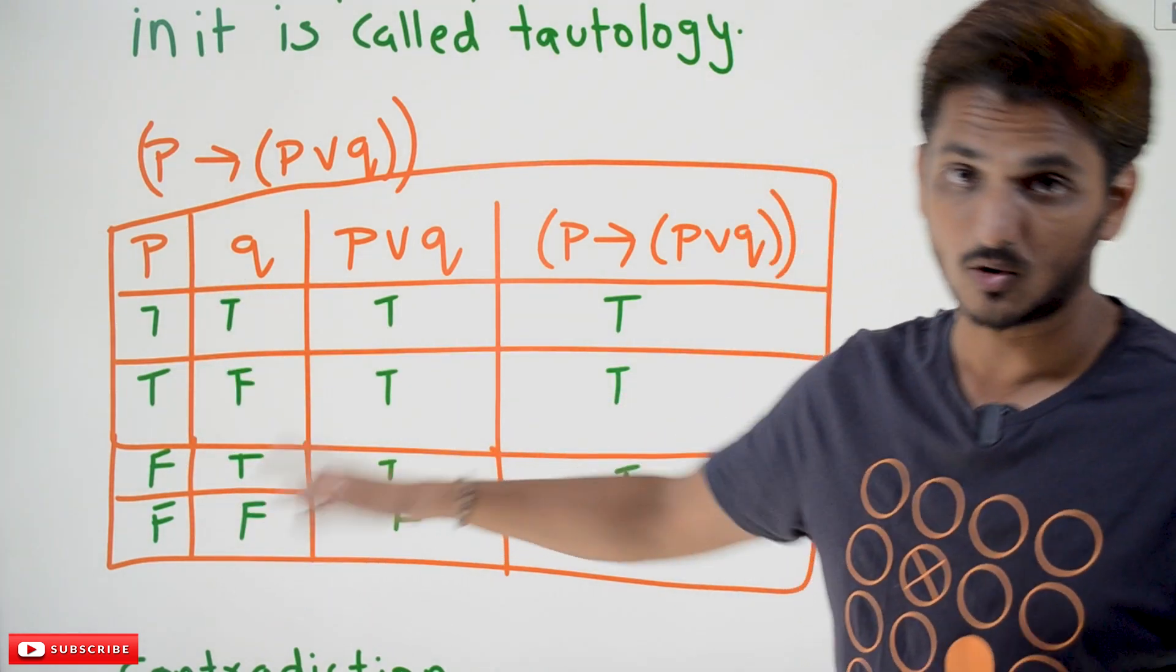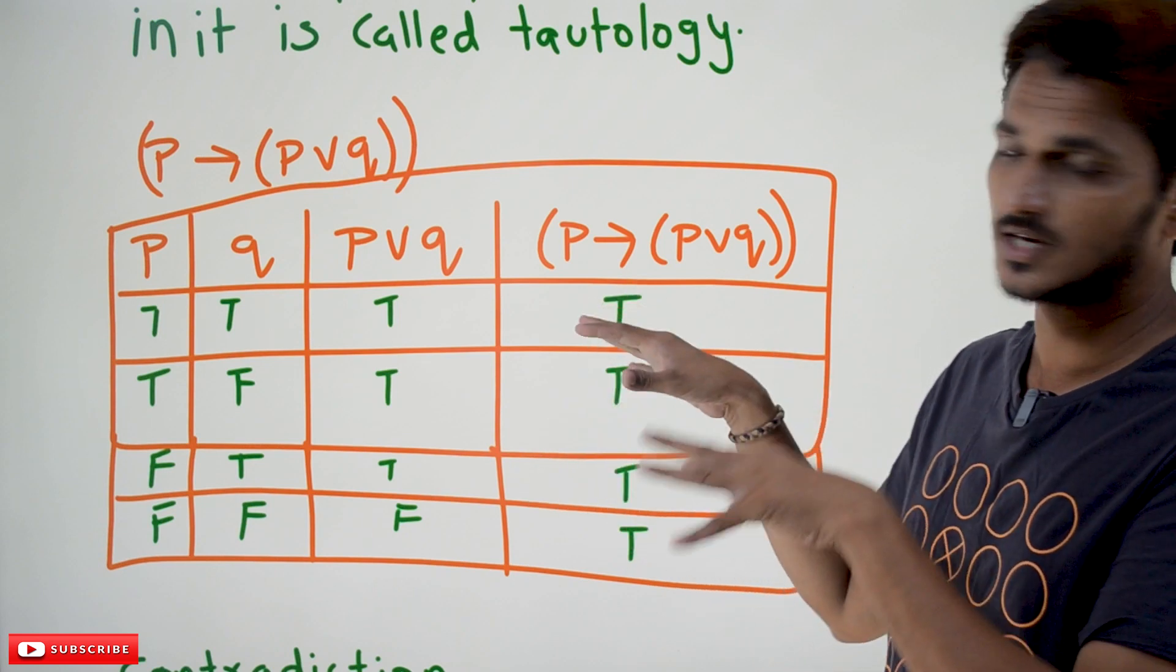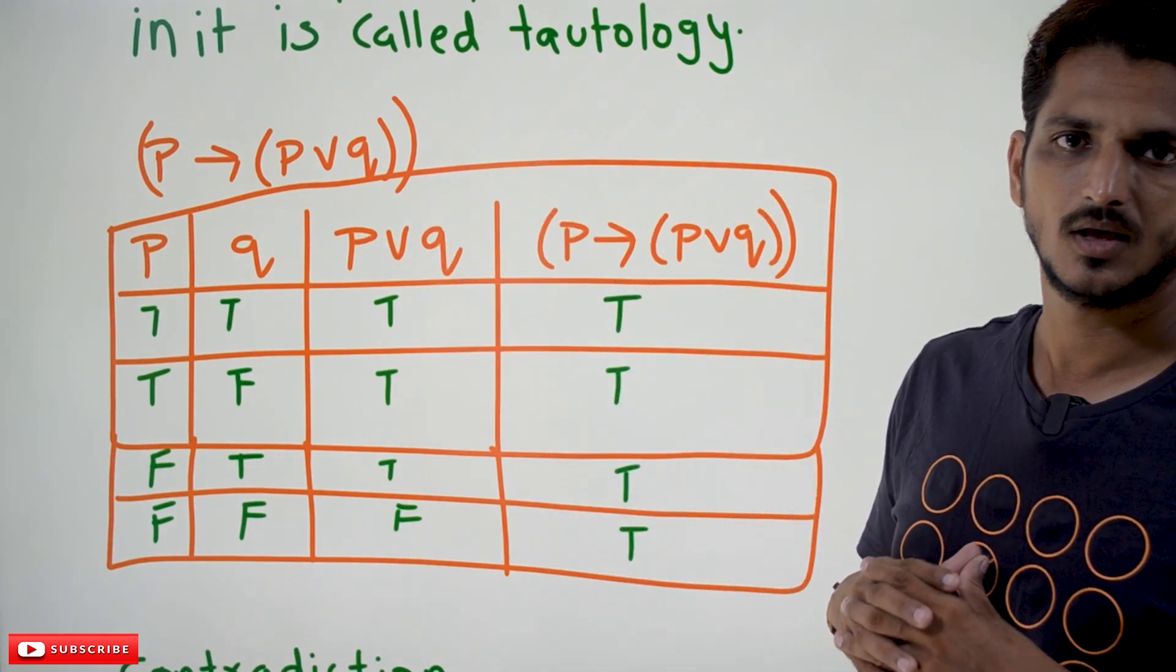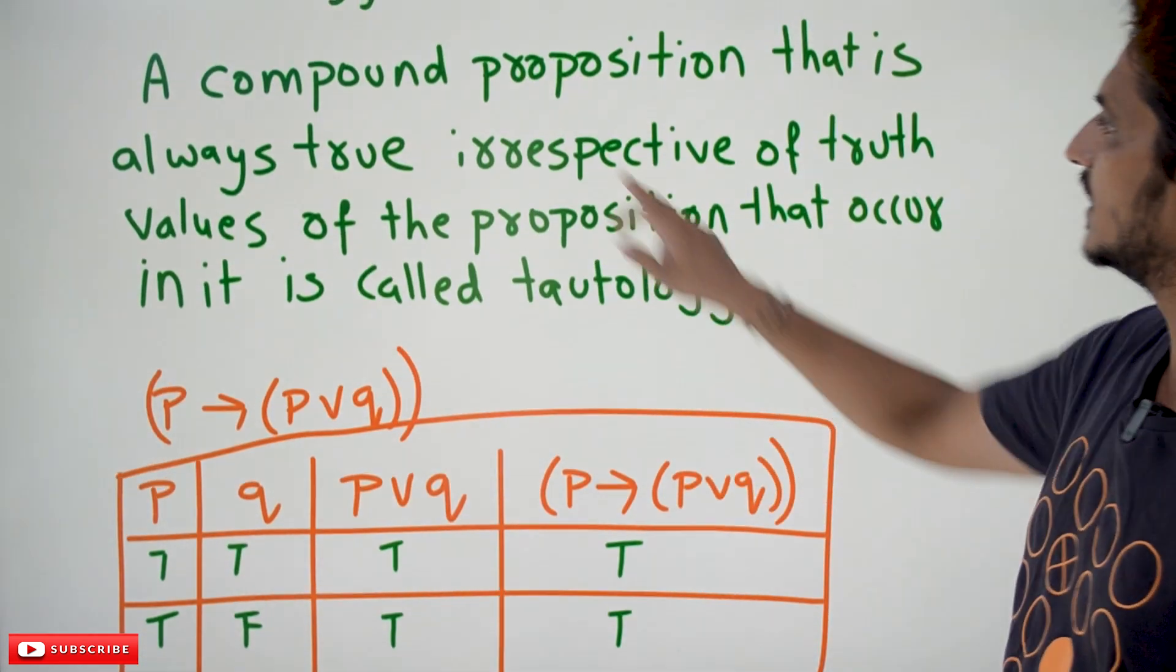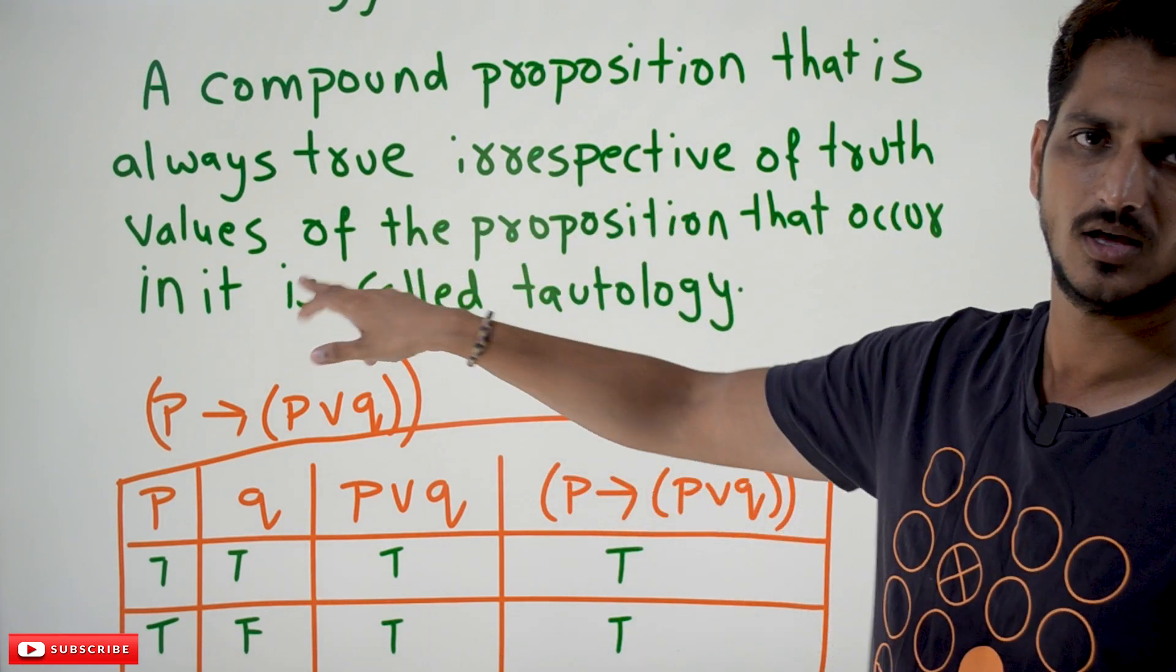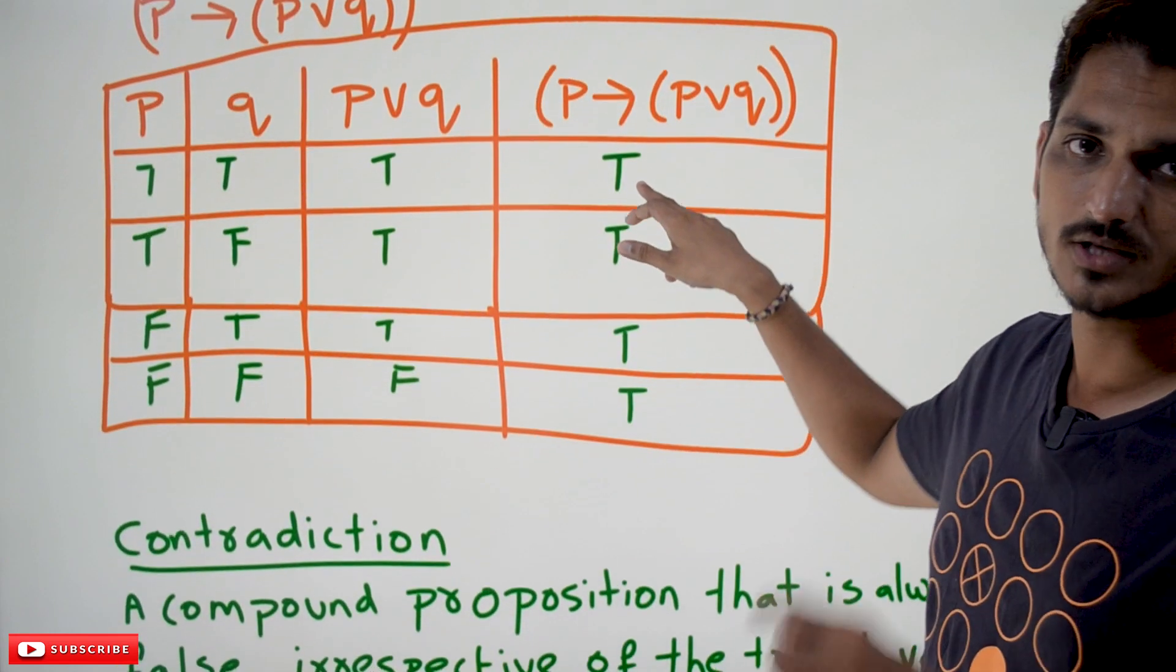See, how to construct this truth table we already discussed previously. We are not concentrating on how to construct this table. You take any P and Q values - that is what the statement says - irrespective of the truth values of the propositions that occur in it. Whatever the truth values you consider, our output should always be true.